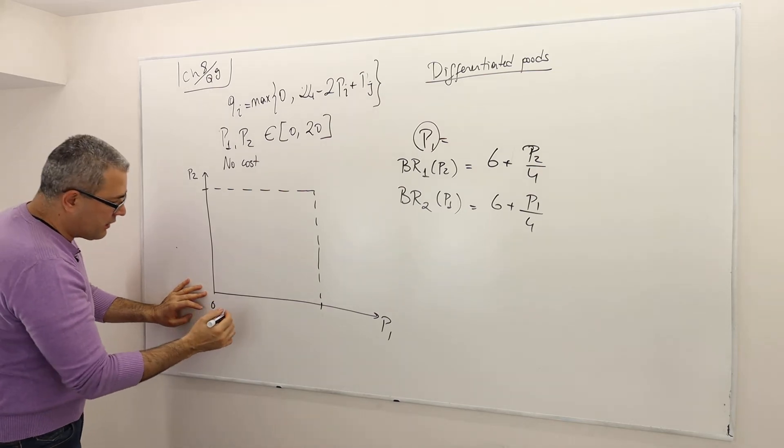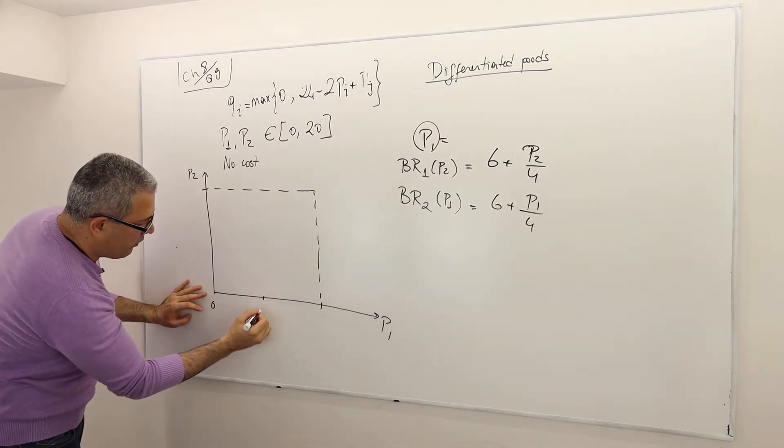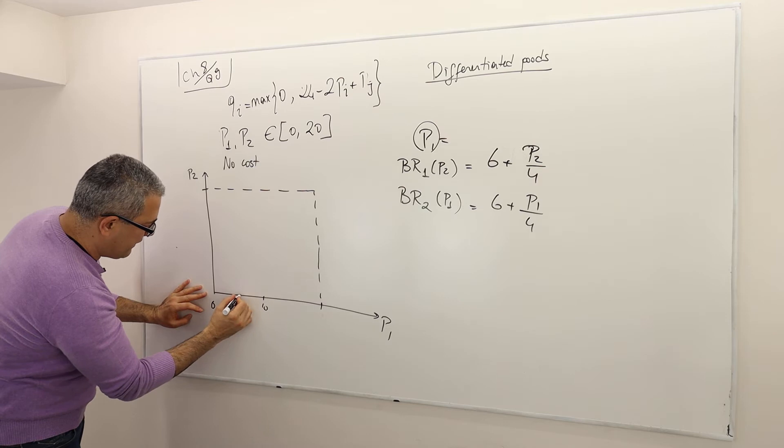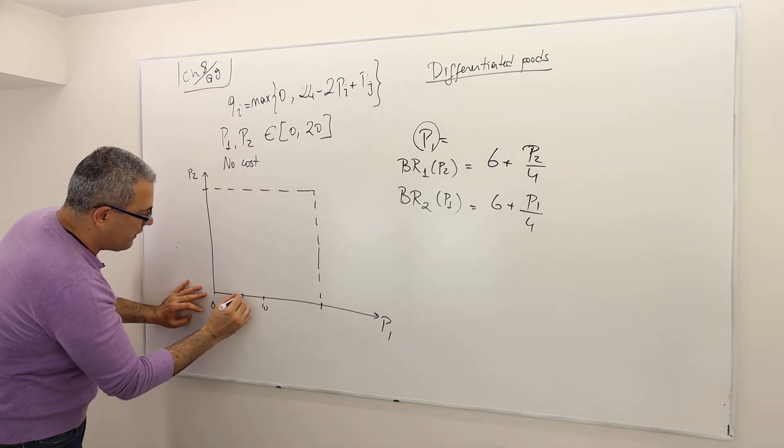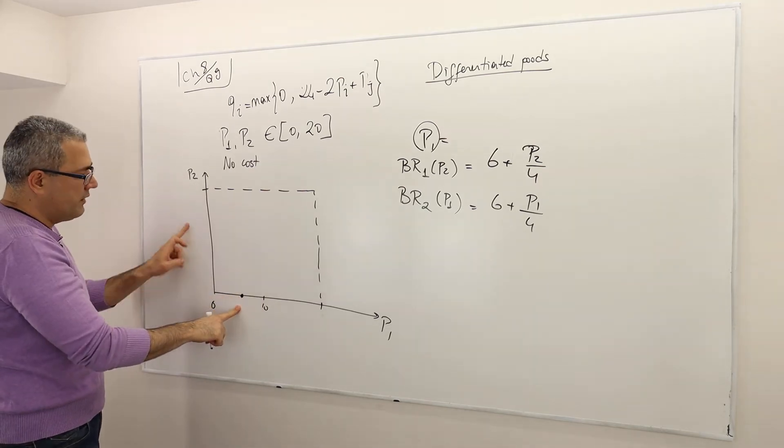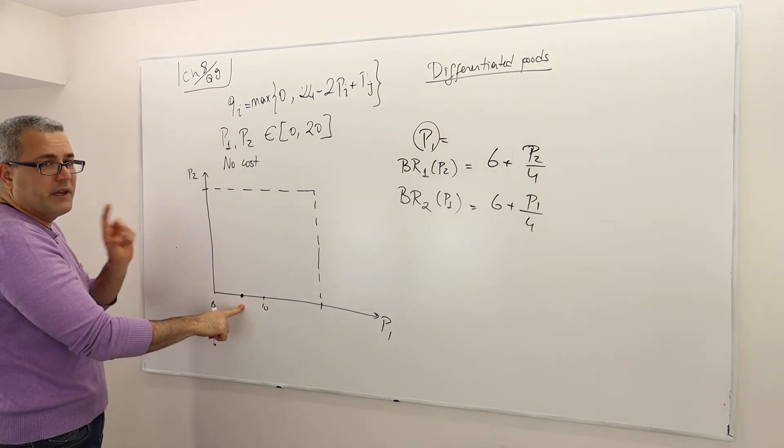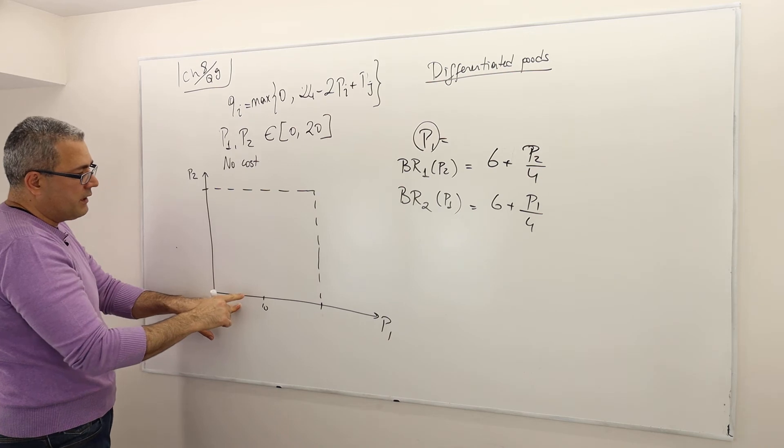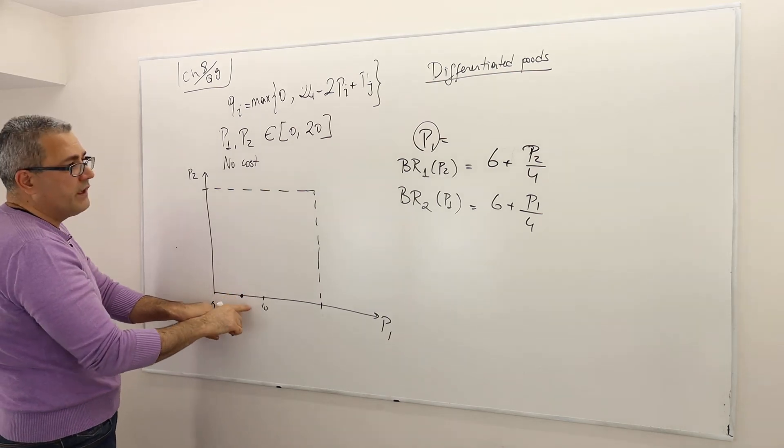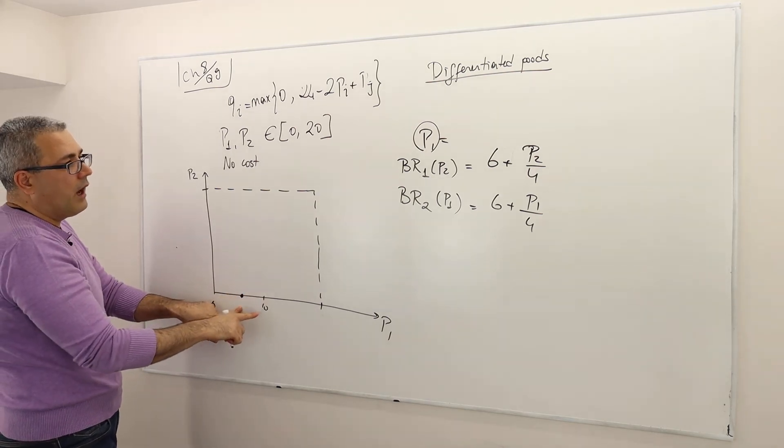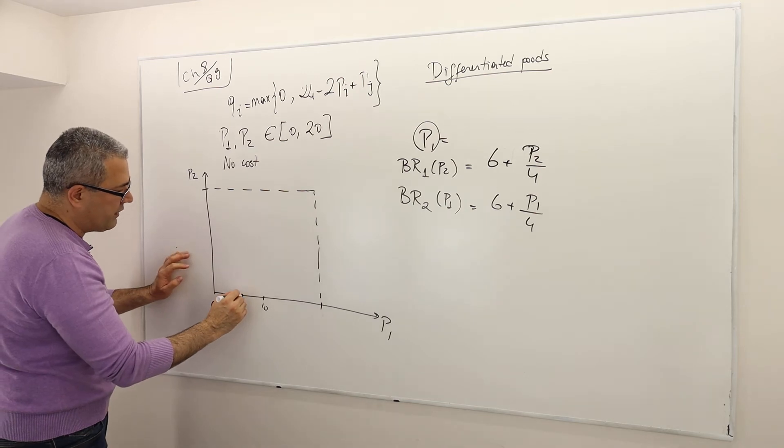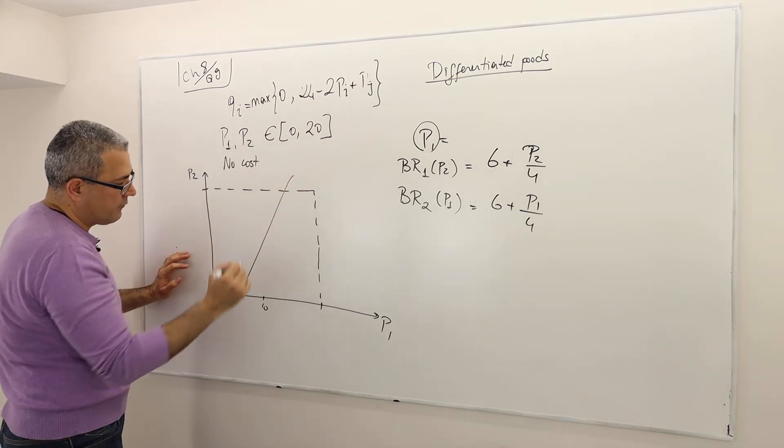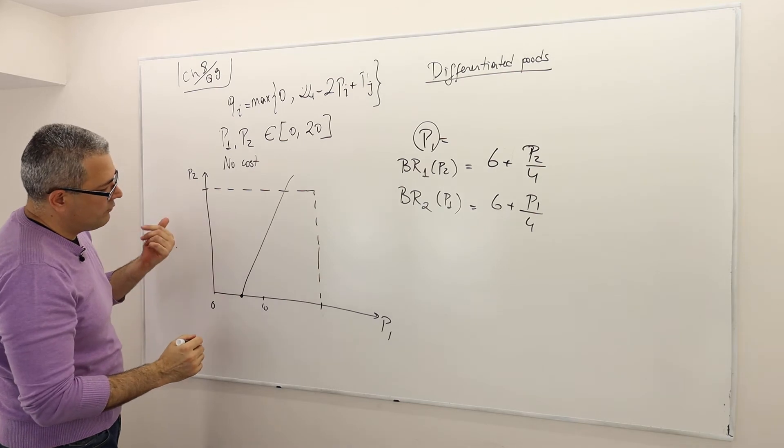So therefore, it starts from 6. Let's call this 10, and 6 is somewhere here. So this is the starting point. So when p2 is 0, p1 is going to be the best response strategy is going to be 6. And from there on, it's going to increase all the way up to, so be careful, it's going to increase something like this.